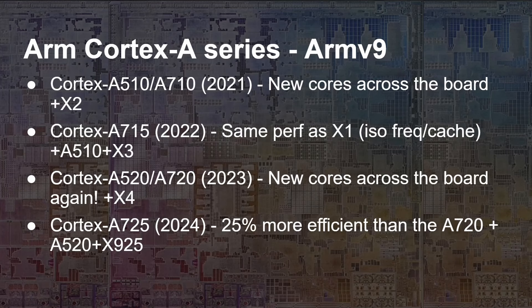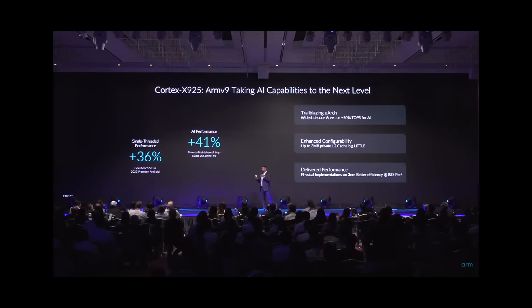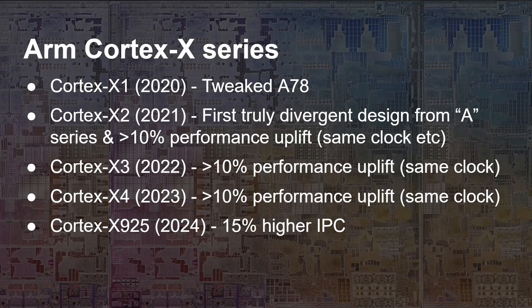Moving to ARMv9 — starting in 2021 we had the first set of ARMv9 cores from ARM, and this year we have the Cortex-A725 along with the X925. The X series includes prime cores, performance cores, and efficiency cores. I have videos about all these chips on this channel if you want to go back and look. But that's not why we're here today — we're here because of how ARM licensing works.